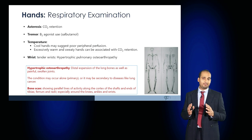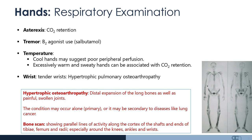Examine the wrist by gently palpating and observing for any signs of tenderness. If so, this may suggest HPOA — hypertrophic pulmonary osteoarthropathy — where distal expansion of the long bones results in painful swollen joints. This can occur alone as primary hypertrophic pulmonary osteoarthropathy but can also be due to disease such as lung cancer. On bone scan, you see parallel lines of activity along the cortices of the shafts of the long bones such as the tibia, femurs, radii, as well as the knees, ankles, and wrists.